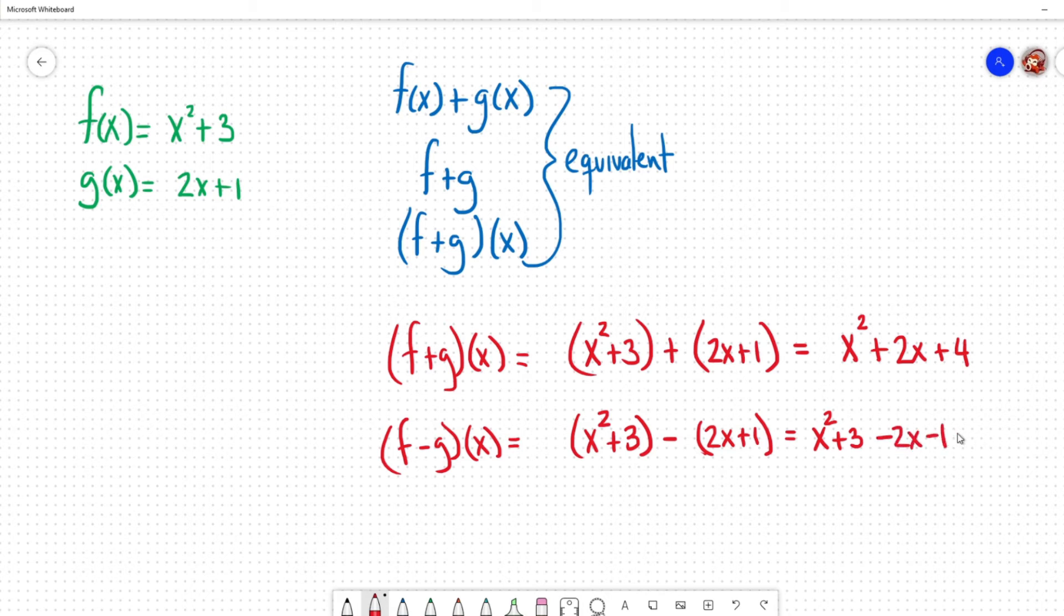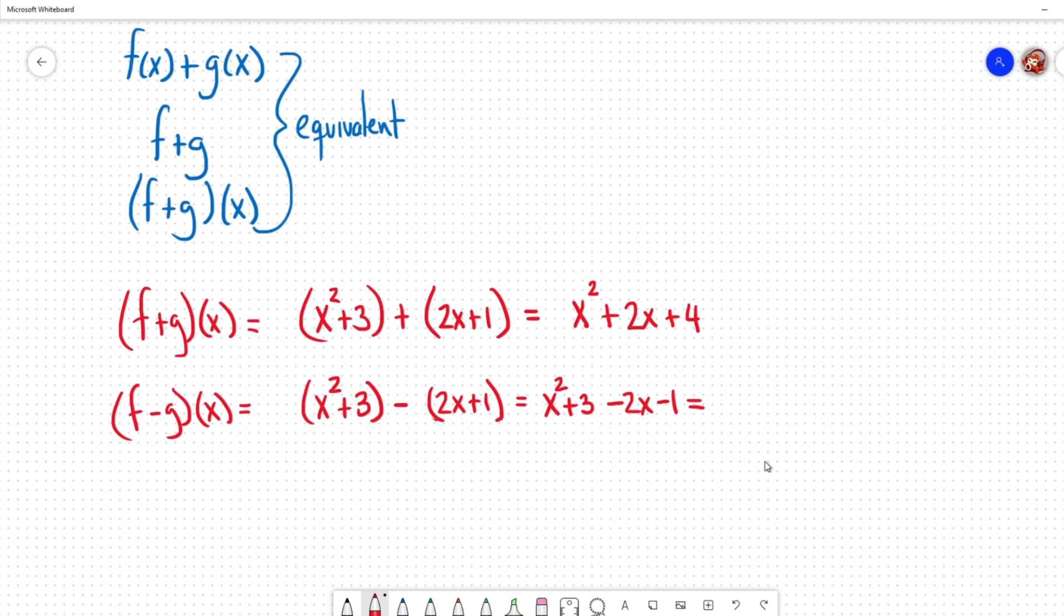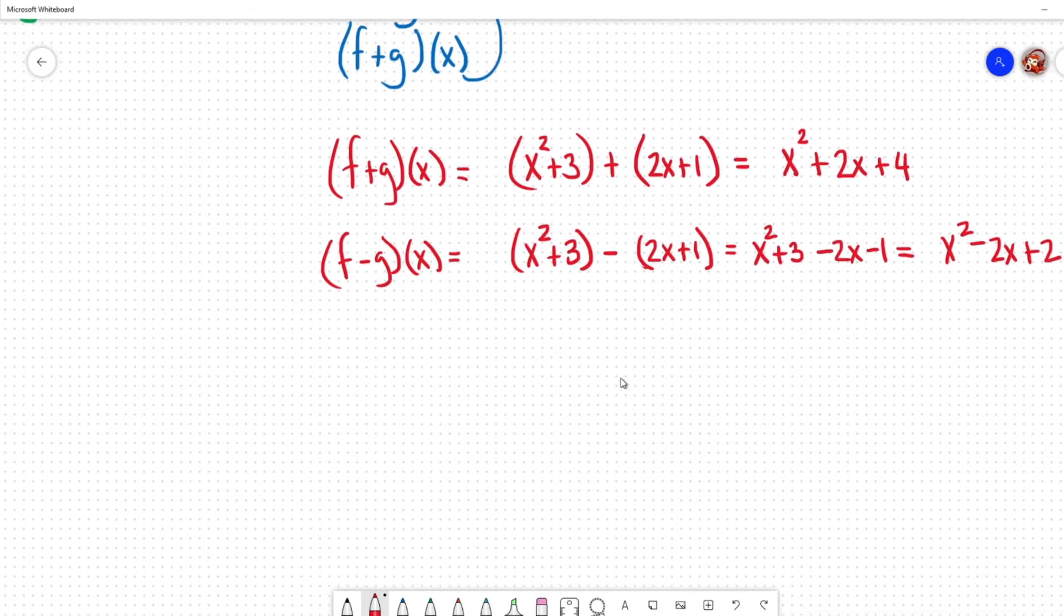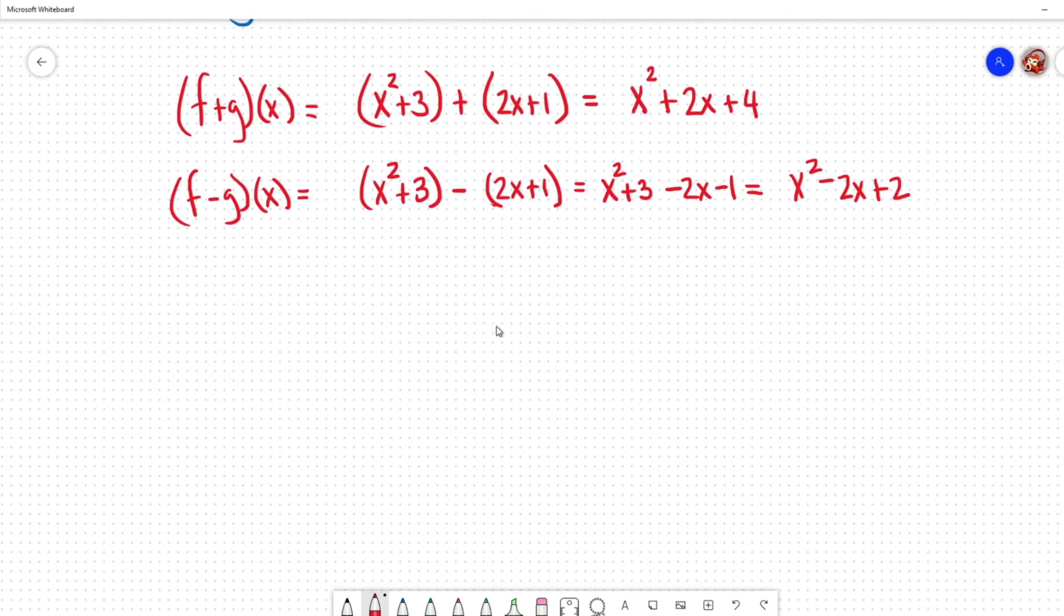So I'm going to go ahead and distribute the negative. So x squared plus 3 minus 2x minus 1. And now I collect like terms so that I am going to get the correct response for this. So x squared minus 2x and 3 minus 1 would give me a plus 2. And there we go. We have our subtracting of the 2 functions.